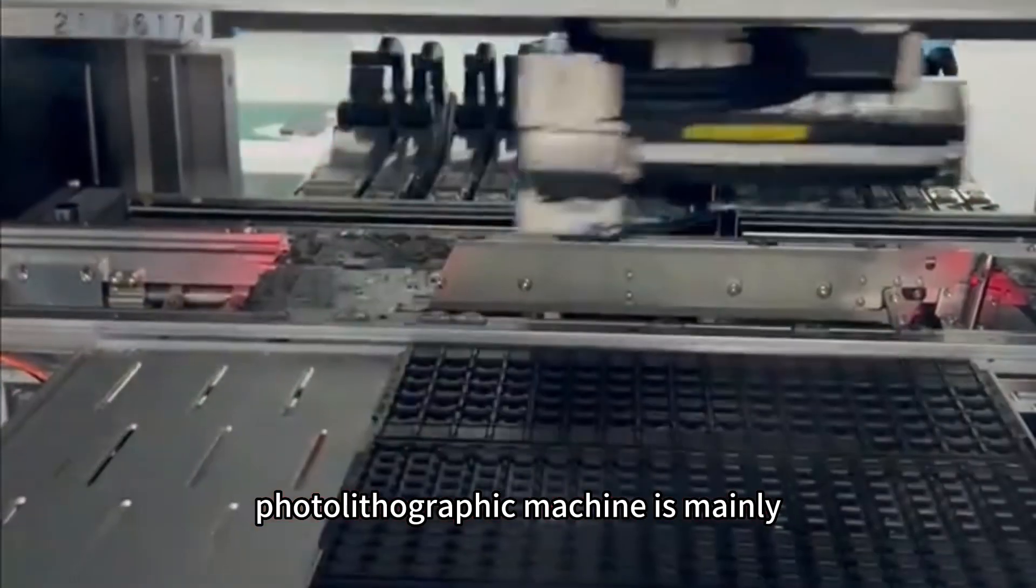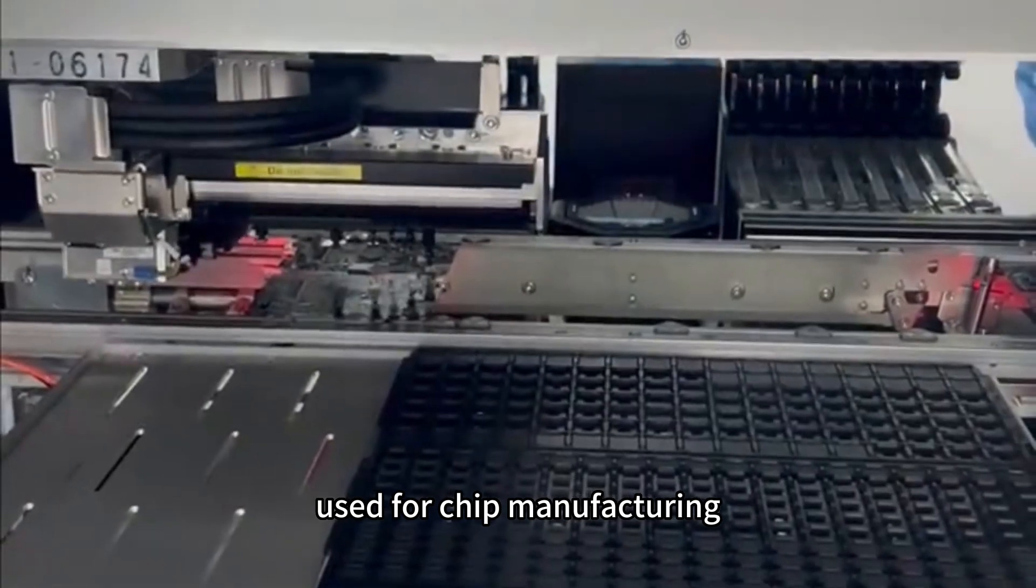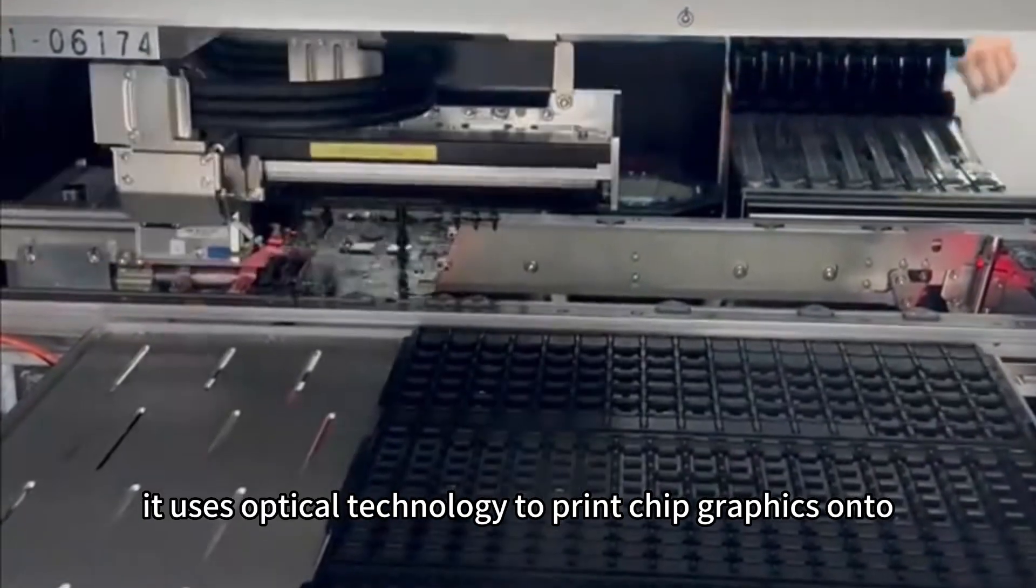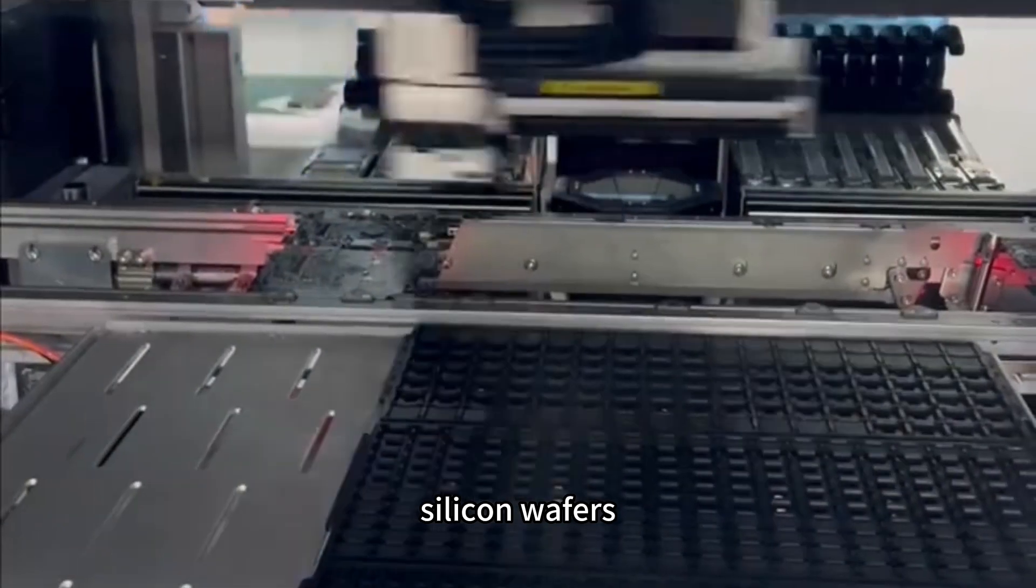Functions. Photolithographic machine is mainly used for chip manufacturing. It uses optical technology to print chip graphics onto silicon wafers.